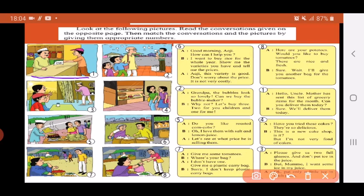Now let's start by looking at the first picture. What do you see in this picture, children? It's a picture of a shop. There is a man who's come to the shop and is giving the shopkeeper a list. Now let's see which conversation will match this picture number one.